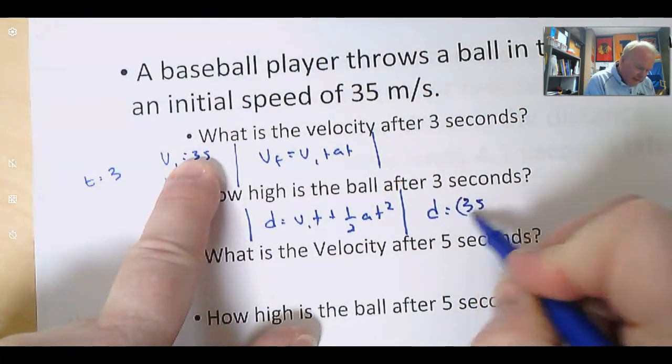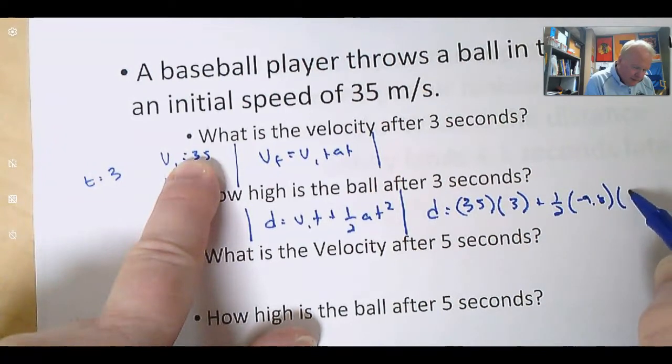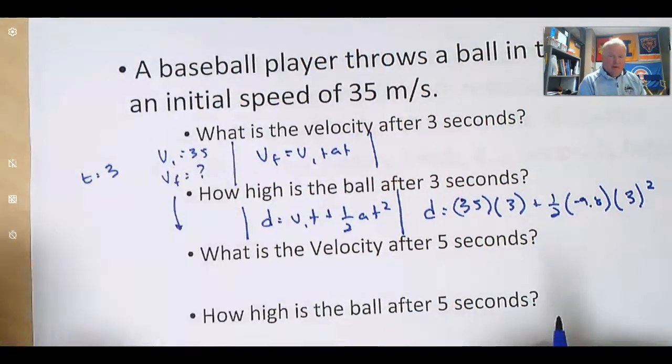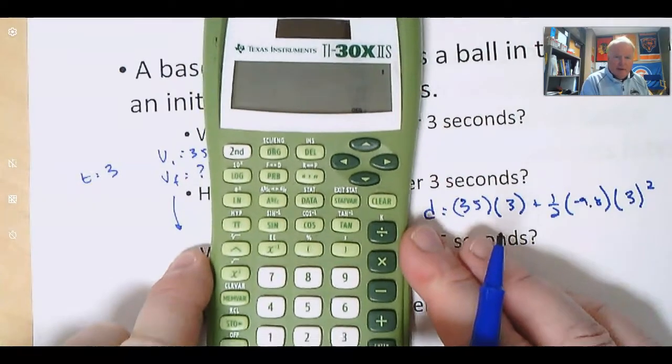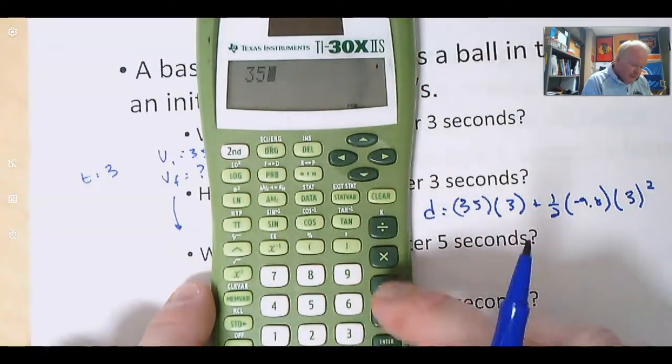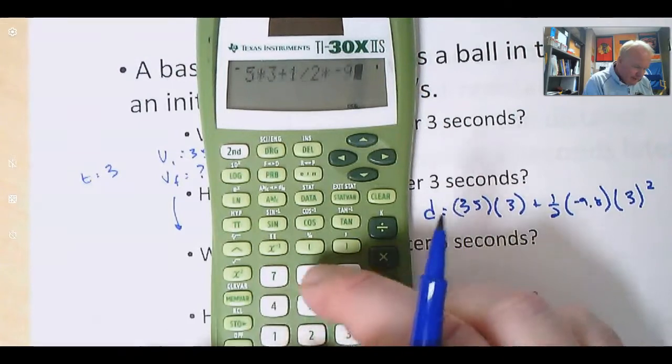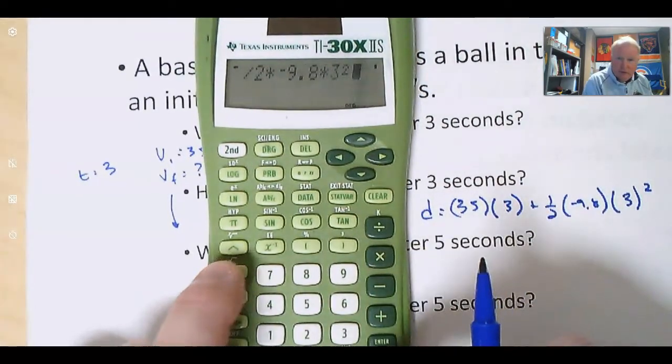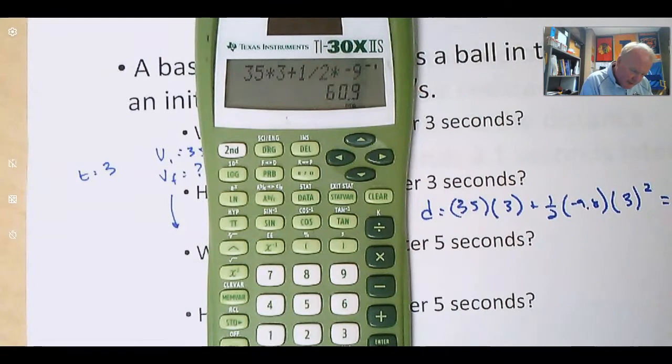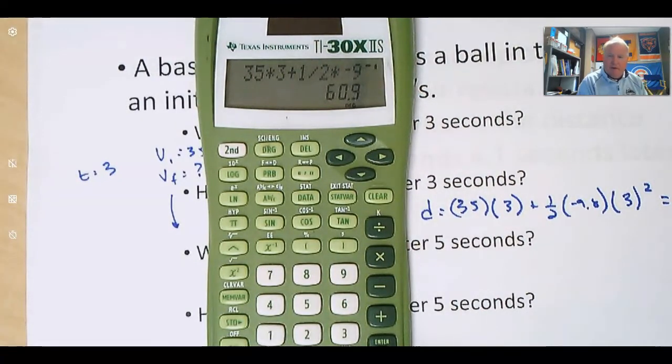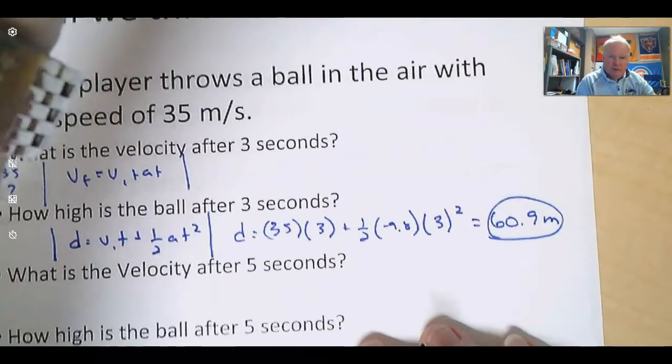When I plug this in, what makes it a little bit difficult is that instead of having a VI of 0 when we drop it, we actually have a VI of 35 times 3 plus 1 half times negative 9.8 times 3 squared. It looks like a lot, but our calculators are perfect to handle all that. We can just plug that straight into our calculator: 35 times 3 plus 1 divided by 2 times negative 9.8 times 3 squared, and we get 60.9. That's equal to 60.9 meters. The ball is still up in the air and it's going up, so it's a positive number.